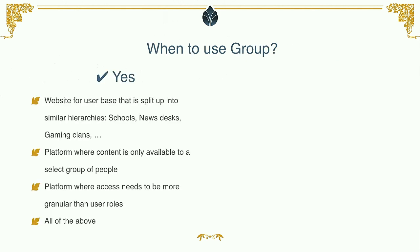When should you be using group? There are a handful of obvious use cases. One is when you want to split up your user base into smaller communities — like when you have a school with obvious hierarchies: a classroom has a teacher and students, above that you have a faculty. You can use groups to divide your user base into such hierarchies and assign teachers certain permissions over their students. You can also use this for news desks with sections like sports and lifestyle, where you only want a certain editor in charge of content within their section.